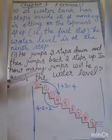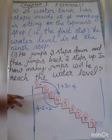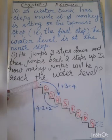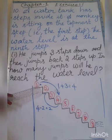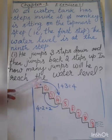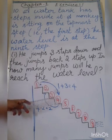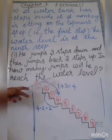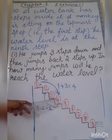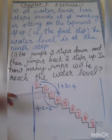He jumps 3 steps down. These are the down steps. The steps are down. So the monkey is at position step 1. He jumps 3 steps down — that means 3 steps. What do you do? Steps down. This is the first step. Jump 3 steps. So, 1 plus 3 is equal to 4.